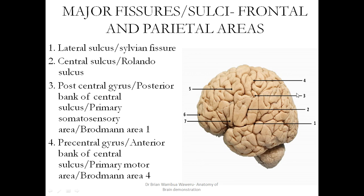Label 3 shows us the post-central gyrus — the gyrus behind the central sulcus. This represents the posterior bank of the central sulcus, also known as the sensory strip. It is the primary somatosensory area.